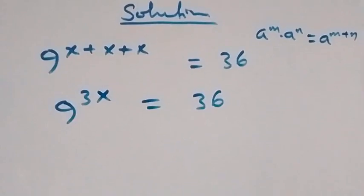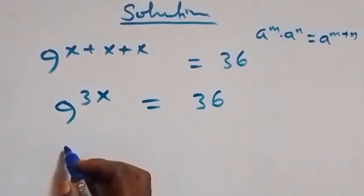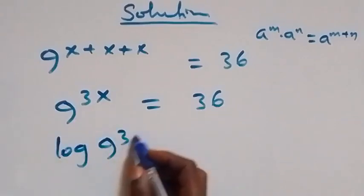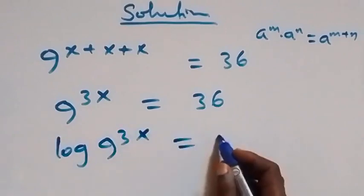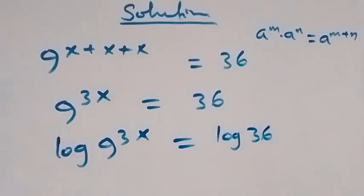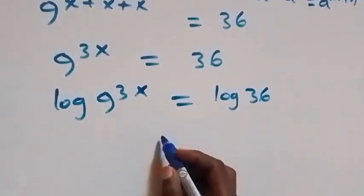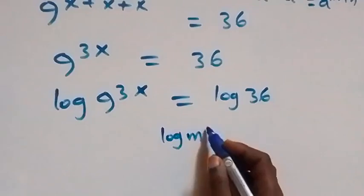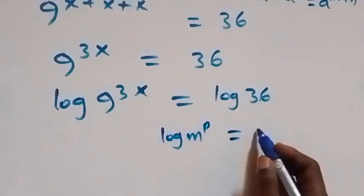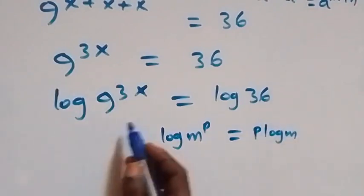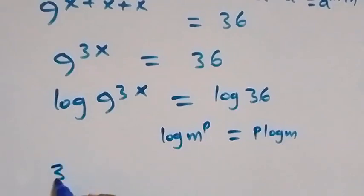Next, we take the log on both sides, giving us log of 9 raised to power 3x equals log 36. We then apply the power law of logarithms — log m raised to power p equals p log m — so the power 3x comes down and we have 3x log 9 equals log 36.